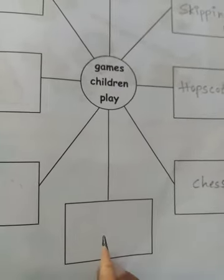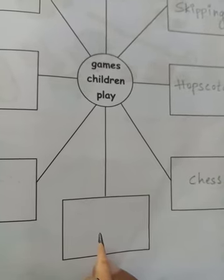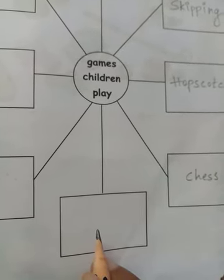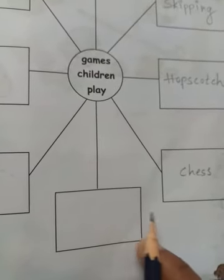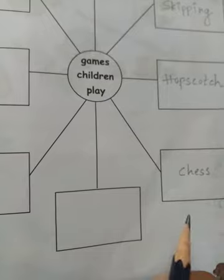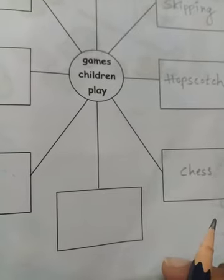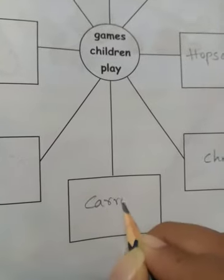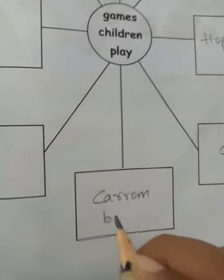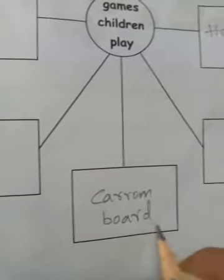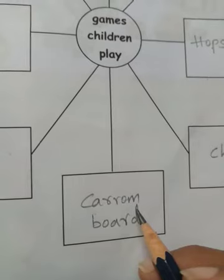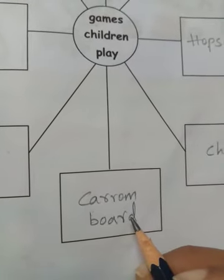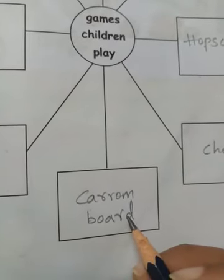Then caroms - you all know the carom board, right? There are white coins and black coins on the carom board, a striker, and four holes. You can write 'carom board': C-A-R-R-O-M B-O-A-R-D, or just 'carom'. Carom board is an indoor game - we can play it inside the house.